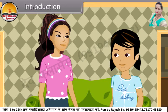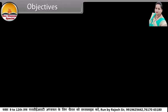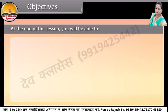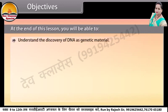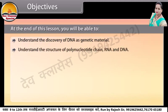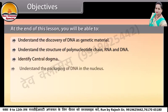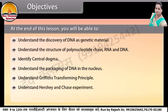Let me explain in detail. At the end of this lesson you will be able to: understand the discovery of DNA as genetic material; understand the structure of polynucleotide chain, RNA and DNA; identify central dogma; understand the packaging of DNA in the nucleus; understand Griffith's transforming principle; understand Hershey and Chase experiment; and identify the differences between DNA and RNA.